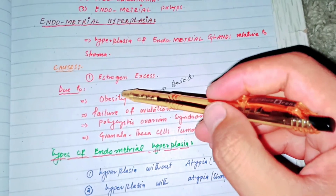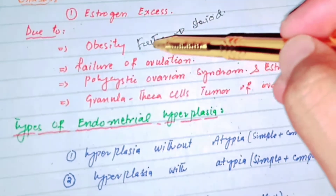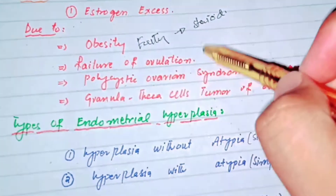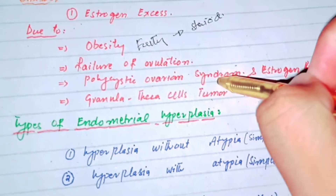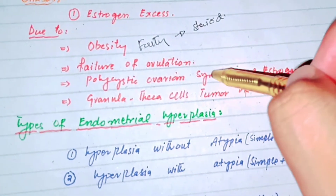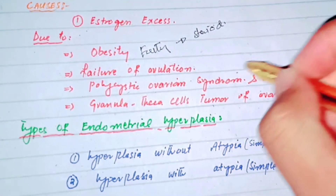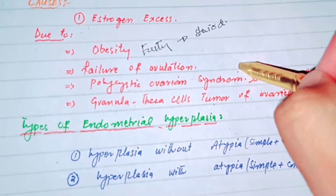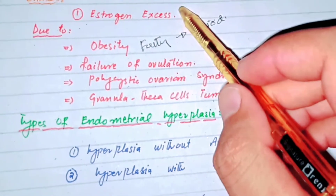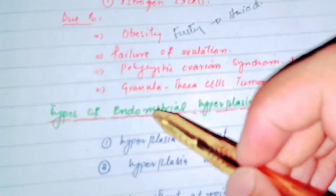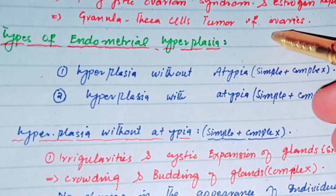Why does estrogen increase? Estrogen excess may be related to obesity — when a female becomes obese she will have a high level of estrogen in her body. Failure of ovulation can also cause estrogen excess, as can polycystic ovarian syndrome. Estrogen replacement therapy — introduction of estrogen from outside the body — and granulosa and theca cell tumors of the ovary can also lead to excess estrogen secretion.